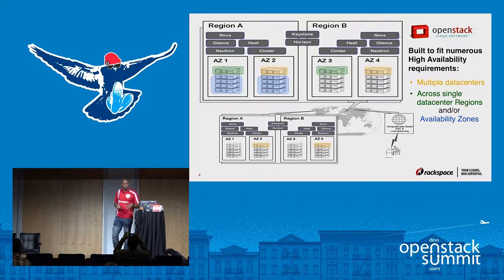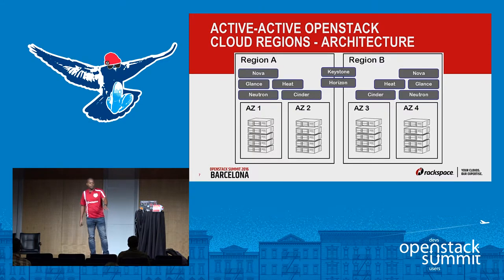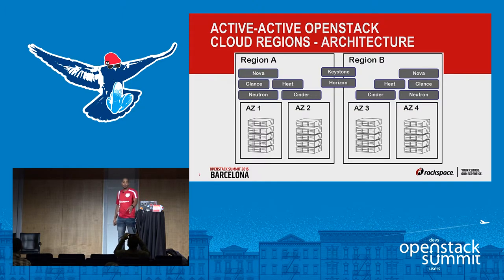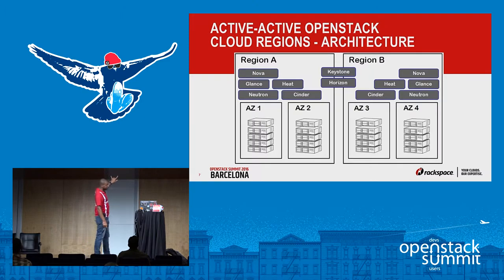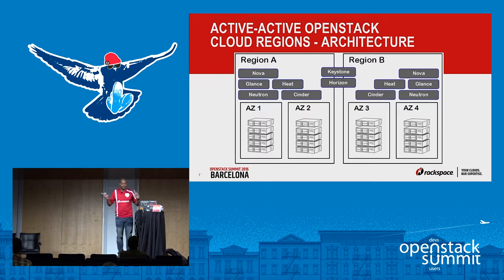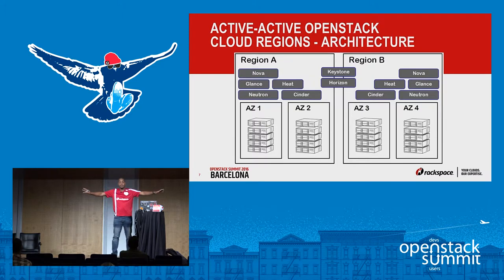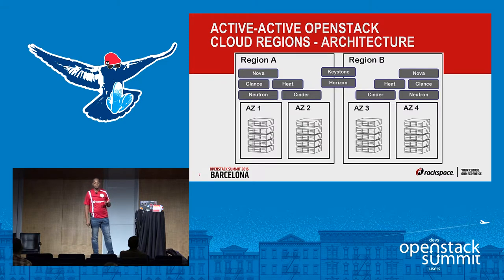The model we're going to focus on today is active-active OpenStack cloud regions. This is a reference architecture I put together. Looking at region A and region B, you'll notice they independently have the OpenStack core services installed — each region has Nova, Glance, Heat, Neutron, Cinder — both completely independent of each other, sharing nothing.